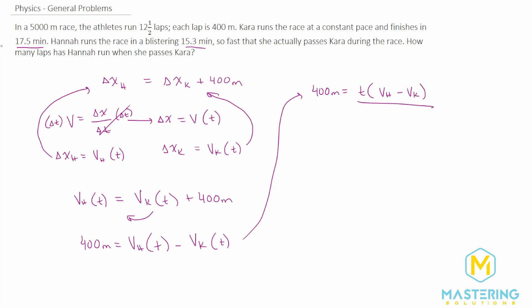And now we can divide both sides of the equation by VH minus VK, which we'll get rid of here. And time will be equal to 400 meters divided by the velocity of Hannah minus the velocity of Kara.